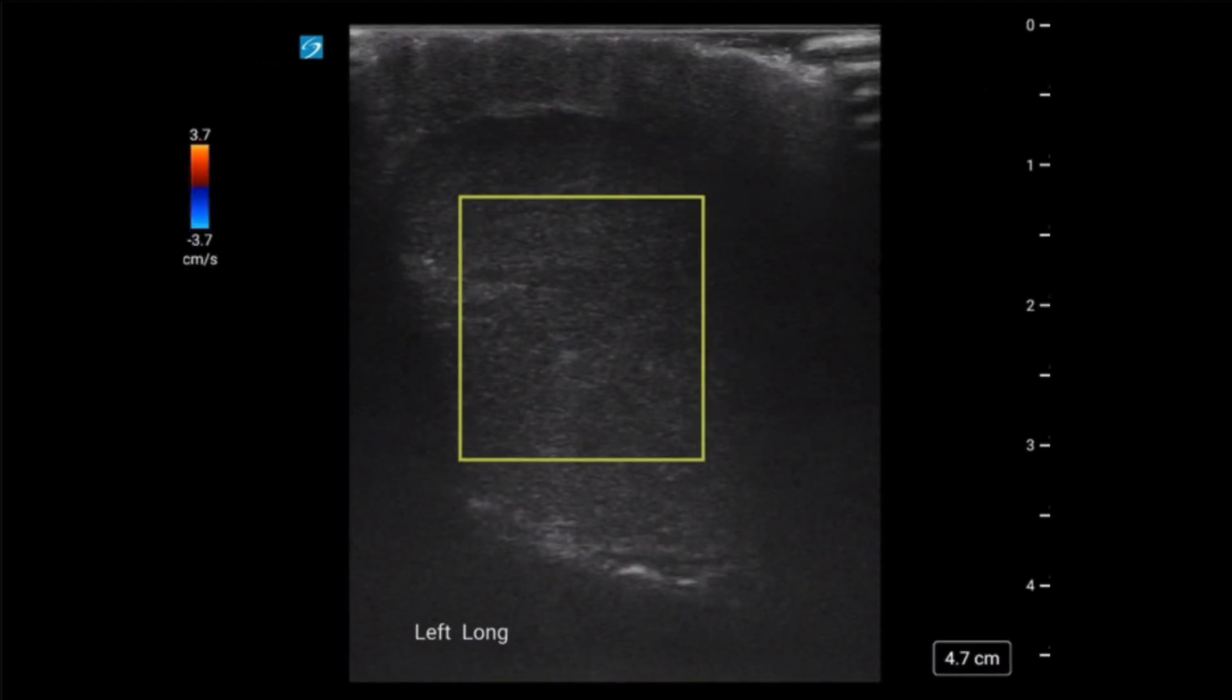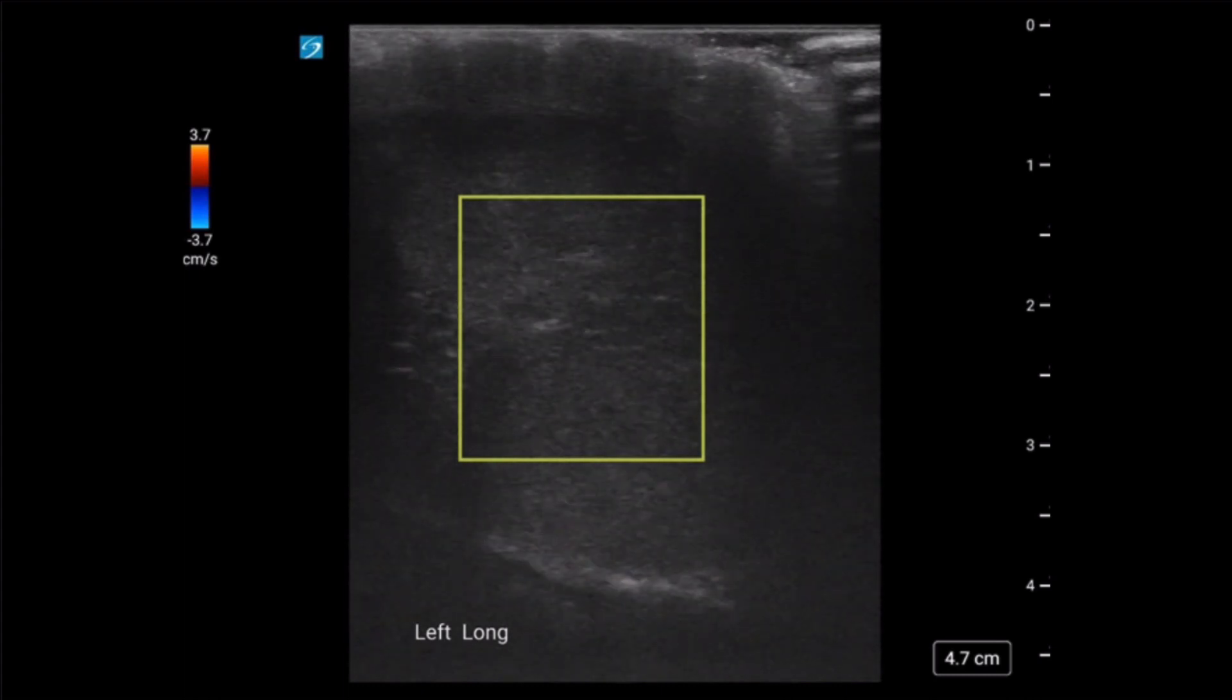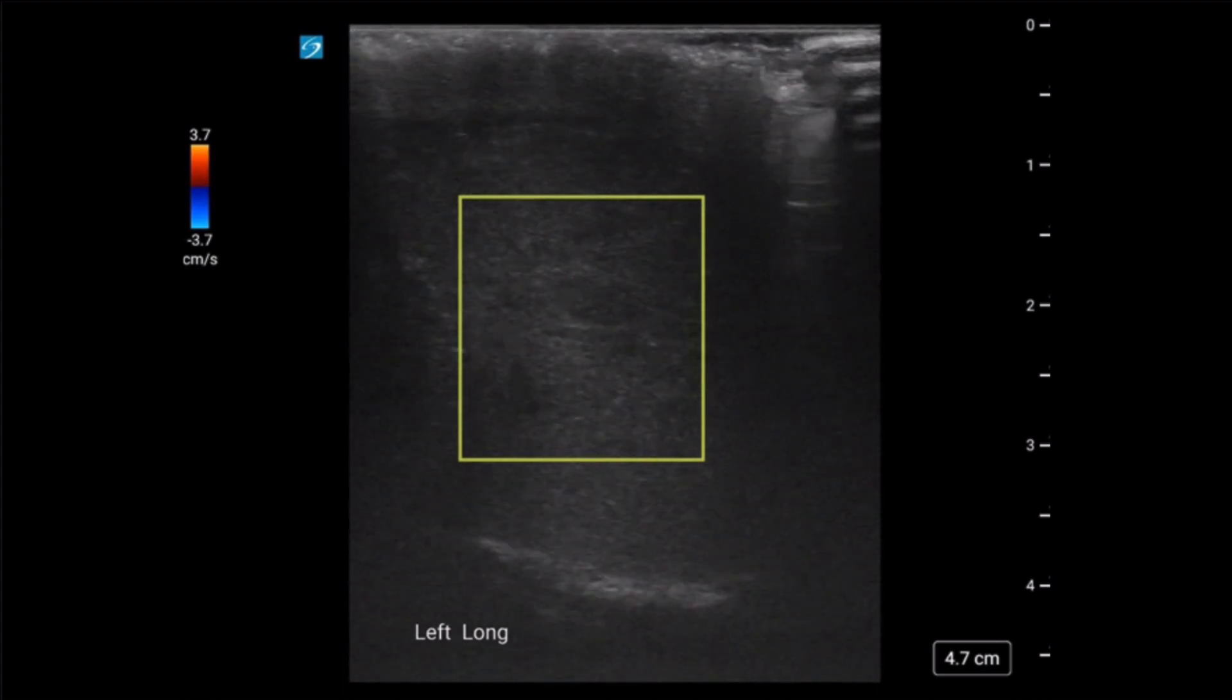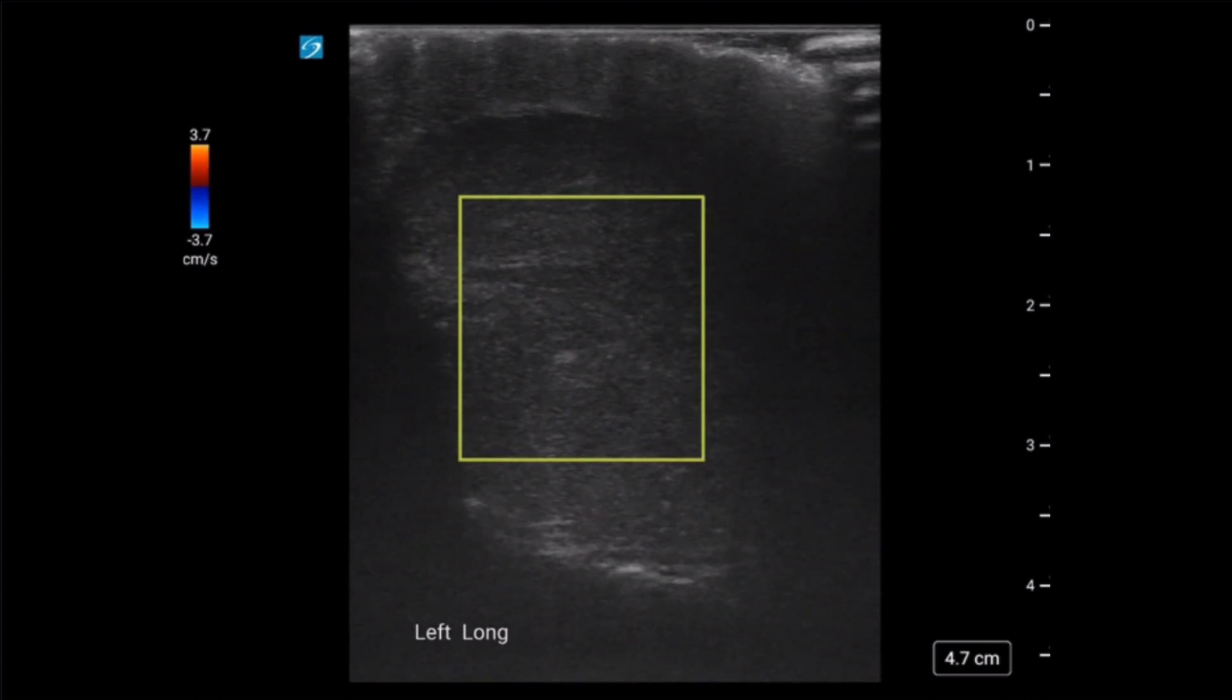Given the concern for torsion, the operators utilize color flow to image the symptomatic testicle in more detail. As many of you are aware, the color displayed only represents directionality, flow towards or away from the probe. Red and blue do not differentiate venous from arterial flow.